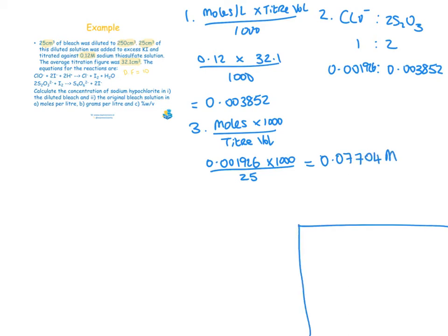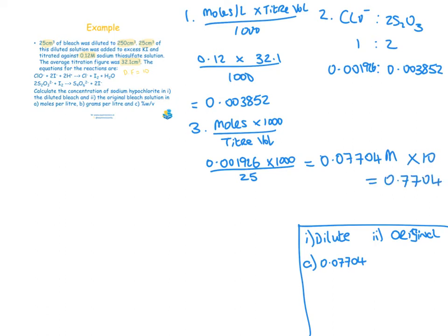So for part one — the diluted bleach — the concentration is 0.07704 mol/L. For part two — the original bleach — we multiply by the dilution factor of 10, giving 0.7704 mol/L.